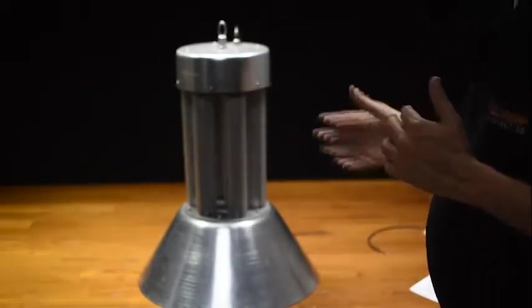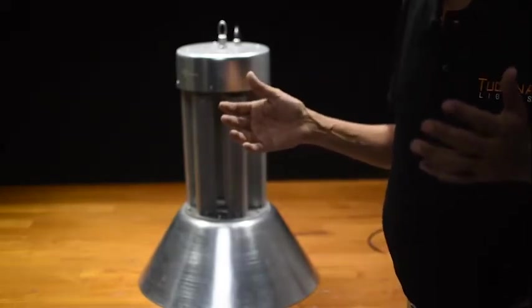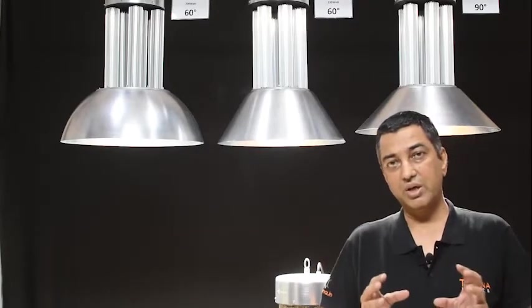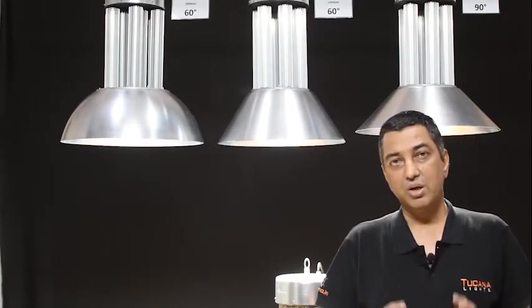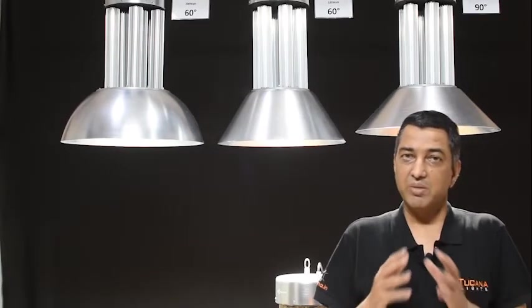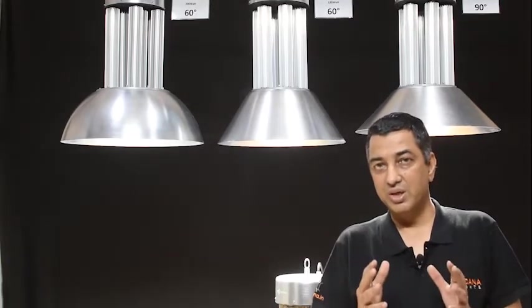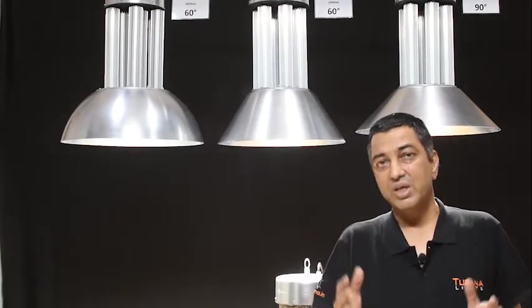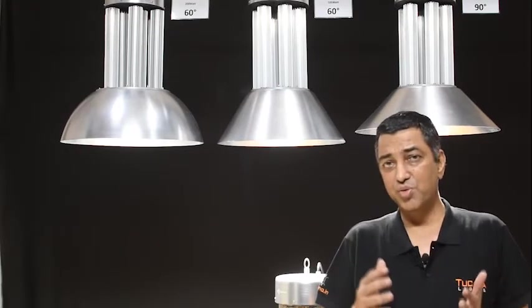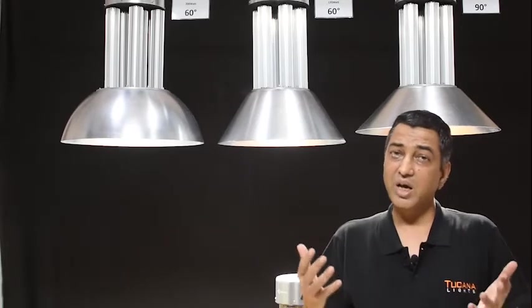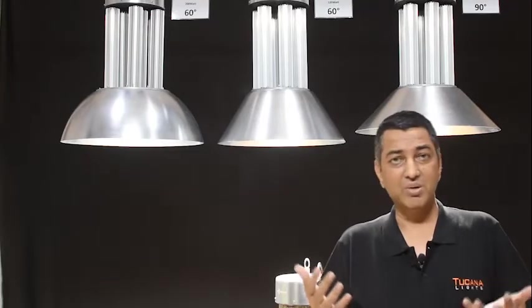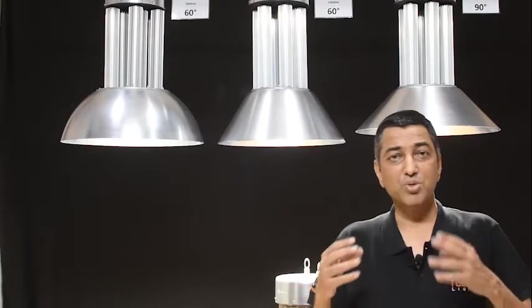The chips are from Osram and Bridgelux, those kind of international brands. Tucana has taken foolish care to make light which is premium, which has longevity, perfect functionality and beauty. A mix of these four things would be very rare to find in the industry. The industry has moved to cast aluminium bodies because they are cheaper, easy to make and they can be mass produced.